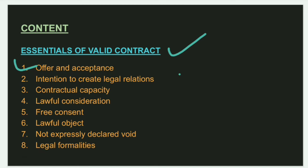The first one is offer and acceptance. Second is intention to create legal relations. Third is contractual capacity. Fourth is lawful consideration. Fifth is free consent. Sixth is lawful object. Seventh is not expressly declared void. And the last one is legal formality.